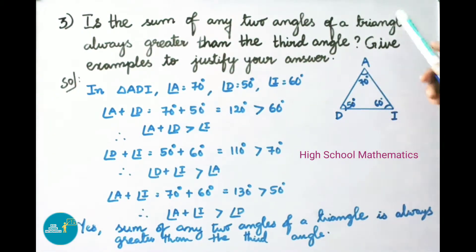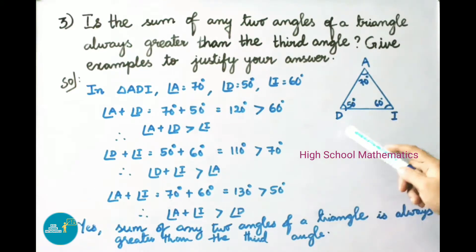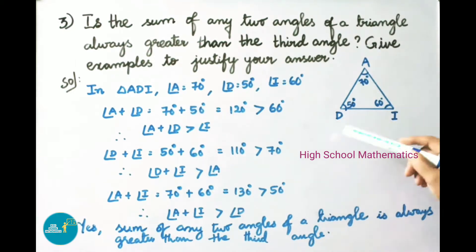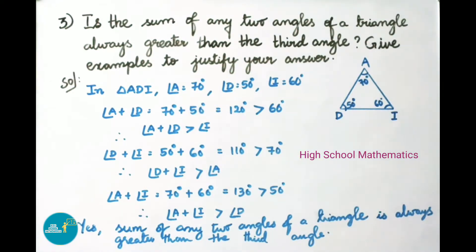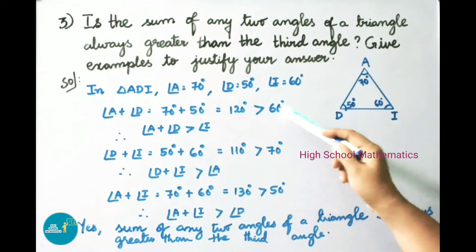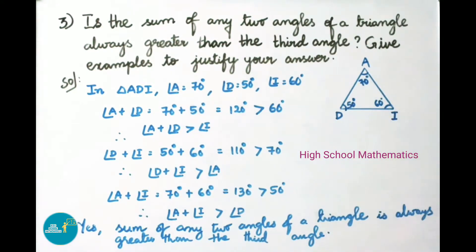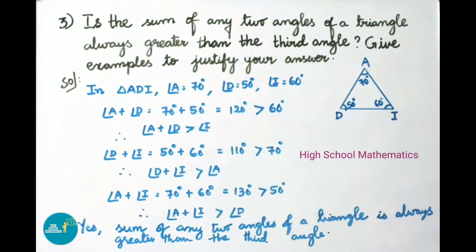Question number three: is the sum of any two angles of a triangle always greater than the third angle? Give examples to justify your answer. Solution: we have taken triangle ADI where angle A equals 70 degrees, angle D equals 50 degrees, and angle I equals 60 degrees. Sum of angle A plus angle D equals 70 plus 50 equals 120 degrees, which is greater than the third angle I, that is 60 degrees. Therefore angle A plus angle D is greater than angle I.